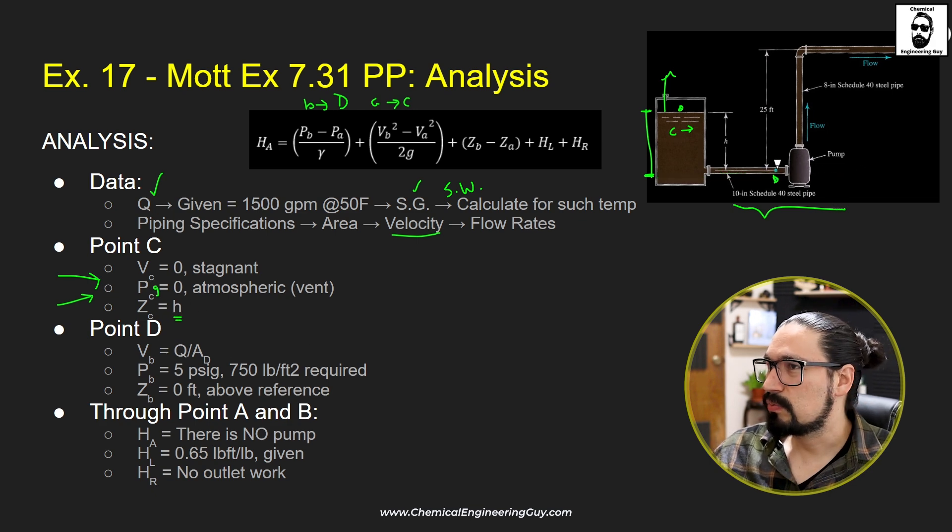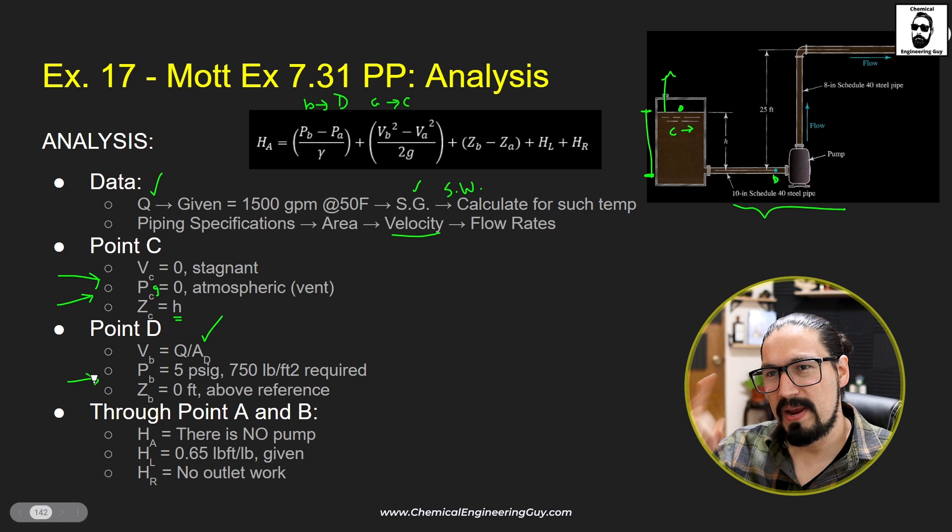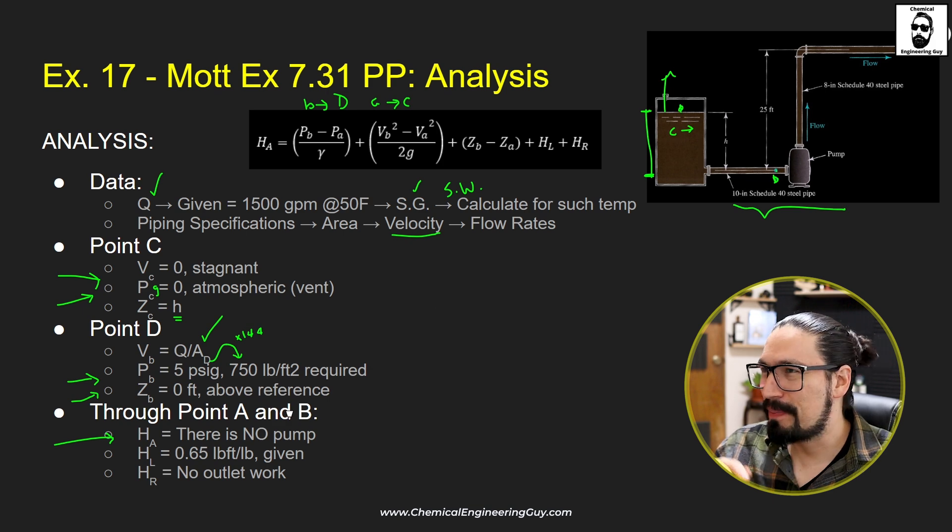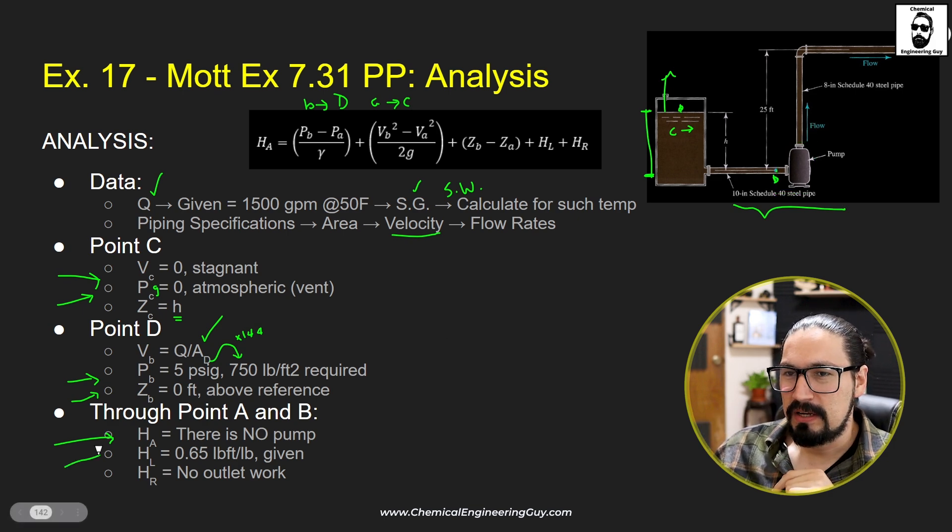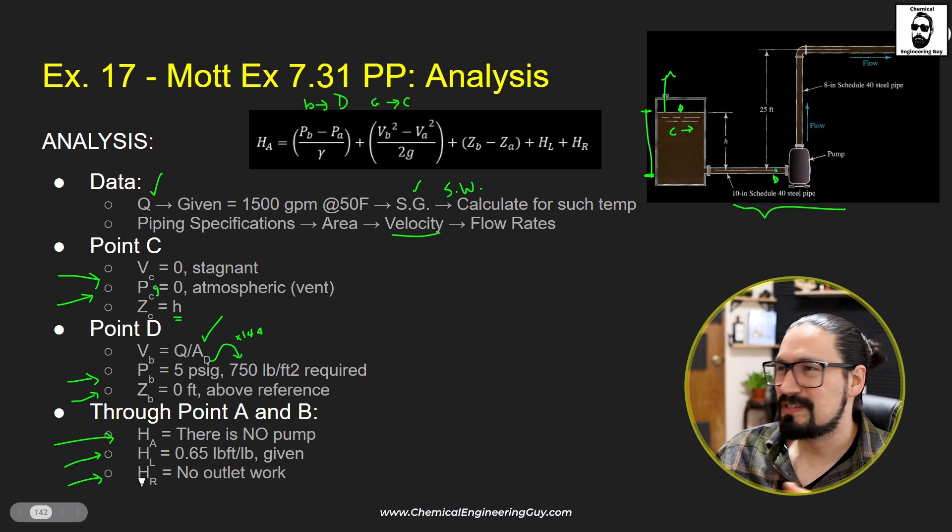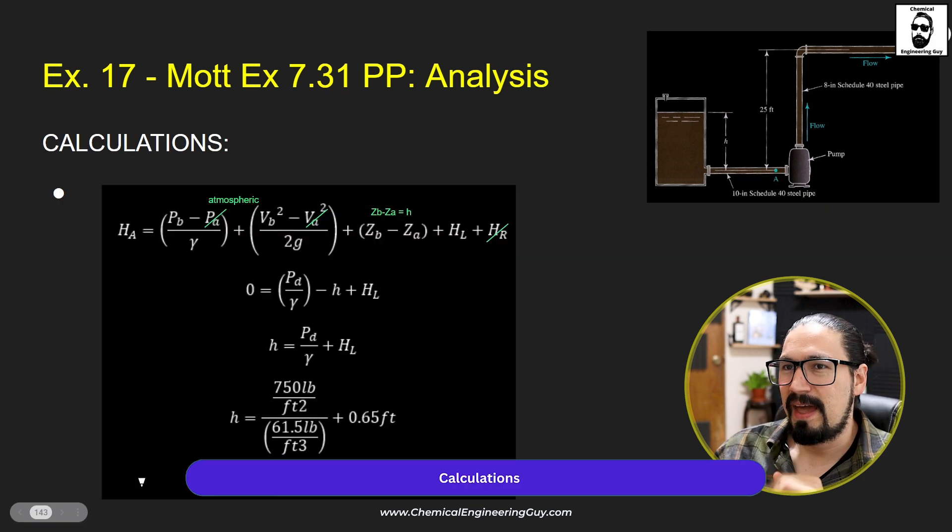Point D: we know the velocity is the volumetric flow rate divided by the area of the pipeline. We know that we cannot go below 5 psig, which changing to pound force per feet square will be multiplying 5 times 144, giving 750 pound force per feet square. Because I selected the reference, this value right here will be zero feet. Through this section C and D, there is no pump. I know that there is a pump, but this pump is actually part of the second part of the pipeline. We are given a friction loss due to the fitting right here in the tank and the length of the pipeline. There's no motors, so this is straightforward.